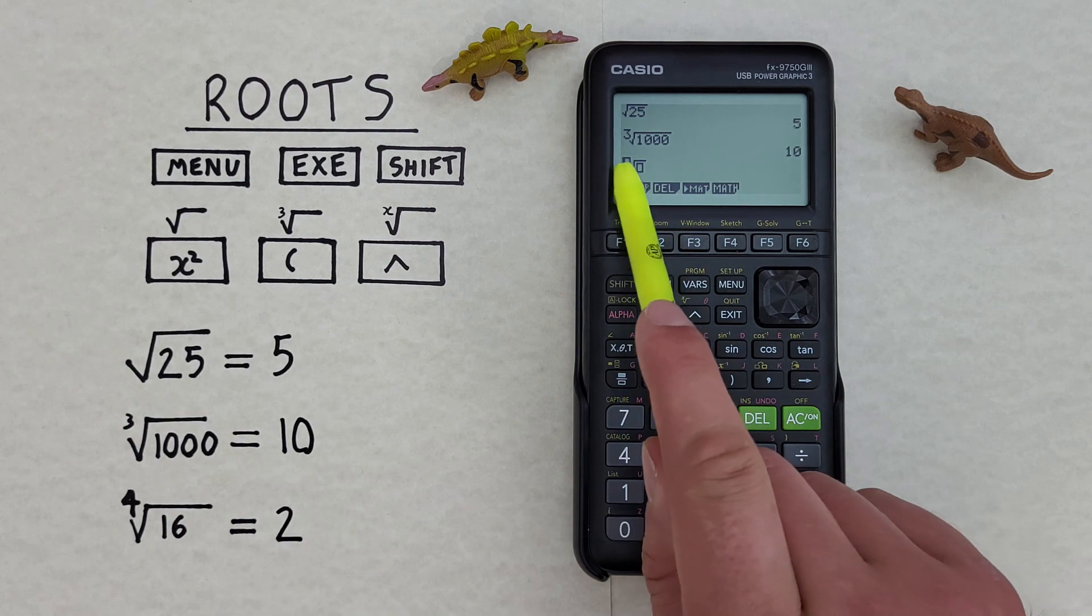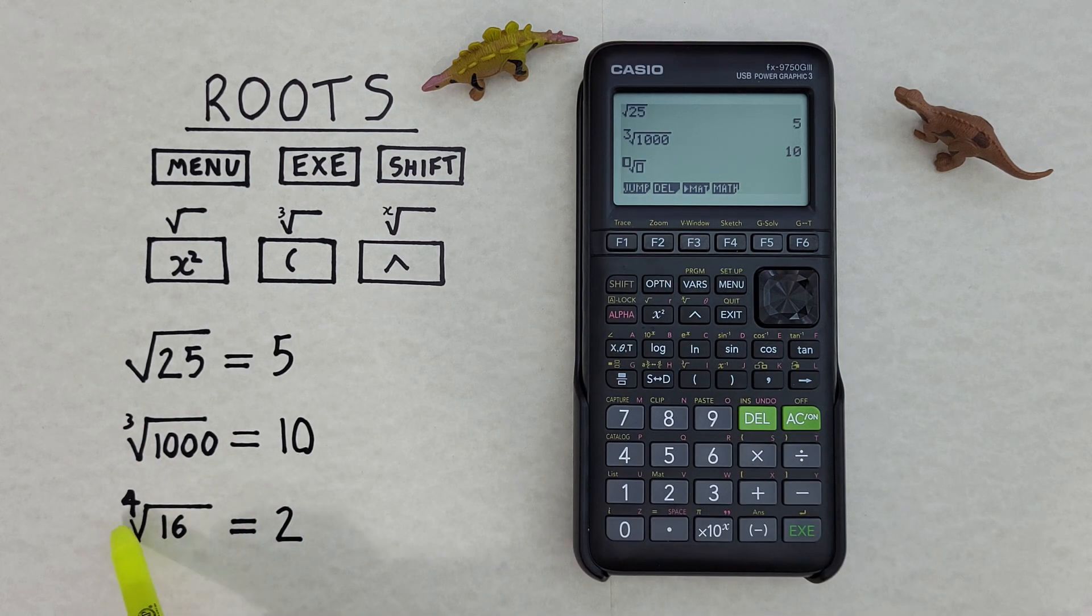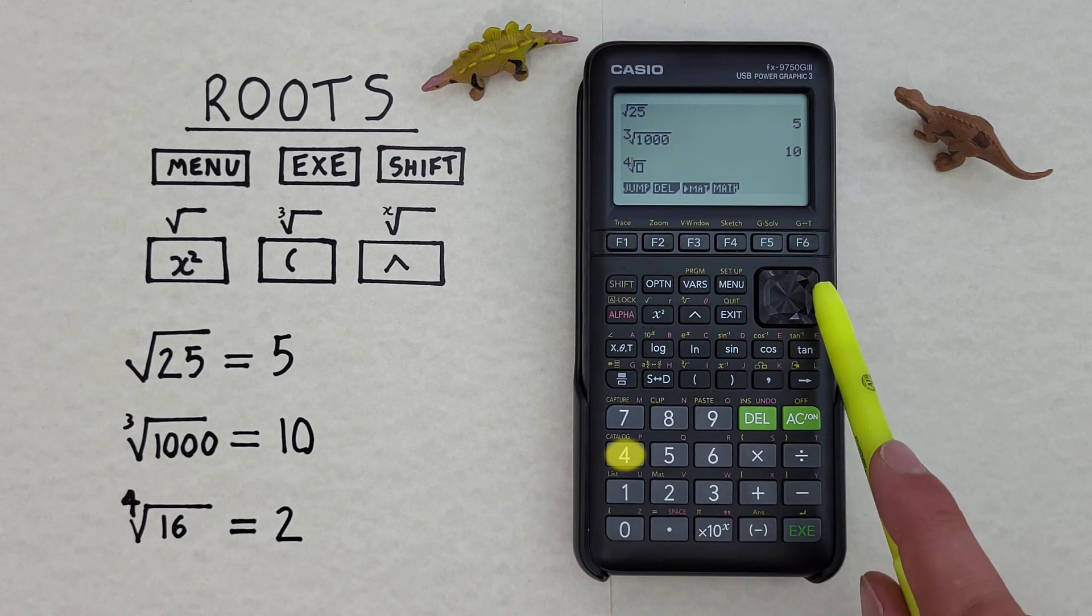In the first box, we enter our 4 because we want to find the fourth root. So we go 4 and then scroll over.